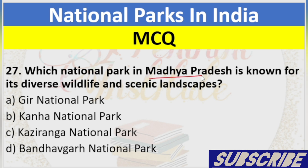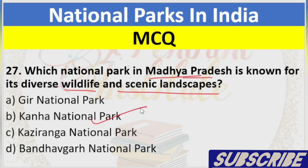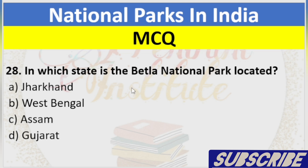Question 27: Which National Park in Madhya Pradesh is known for its diverse wildlife and scenic landscapes? A. Gir National Park, B. Kanha National Park, C. Kaziranga National Park, D. Bandhavgarh National Park. Answer: B. Kanha National Park.